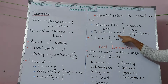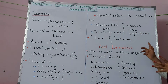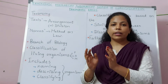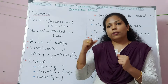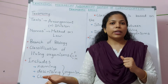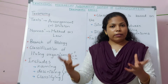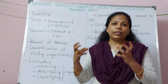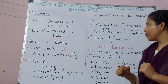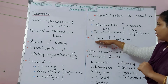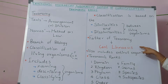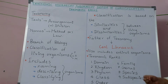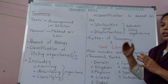We are classifying organisms based on two things: similarities and dissimilarities between living organisms. If two or more organisms have similar characteristics, they are grouped under one category. If organisms have different characteristics, they are separated and put in different groups. The father of taxonomy is Sir Carl Linnaeus.